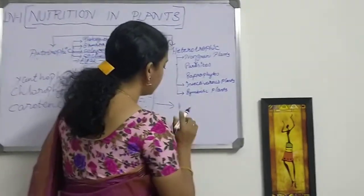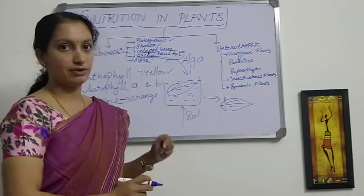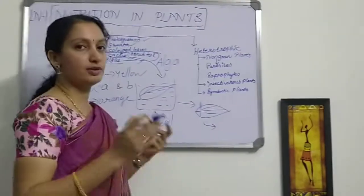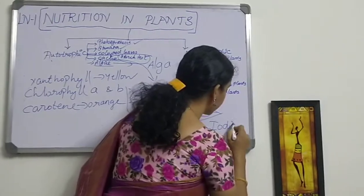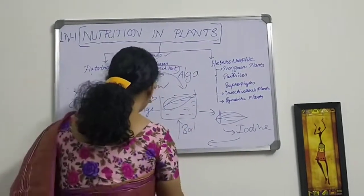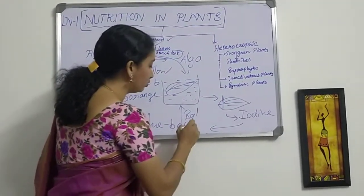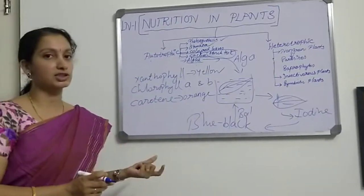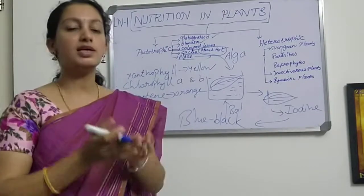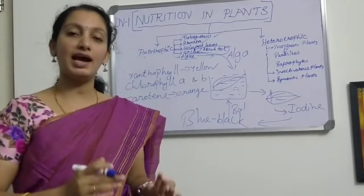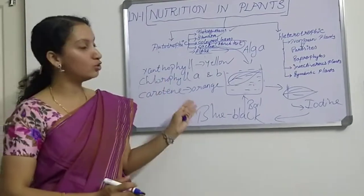Now keep it for some time to dry, then apply iodine drops. If the color changes to blue-black, we can say it contains starch. This is the test for starch. Because once glucose is formed, some food is stored in the form of starch. The detection of starch present in the leaf can be identified by following these steps.